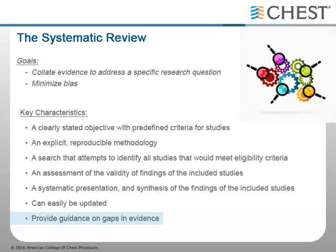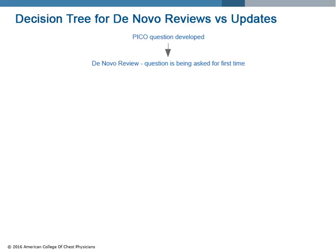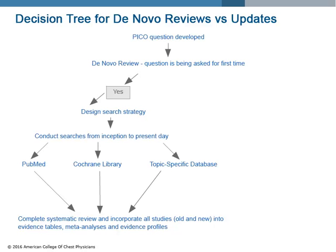While systematic reviews seek to synthesize available evidence on a topic, they also provide guidance on gaps in the evidence. A systematic review can be conducted de novo if the question is being asked for the first time. If so, you will need to conduct a new review and begin by designing a new search strategy and conduct those searches with no date limits in at least two databases, such as PubMed and the Cochrane Library.